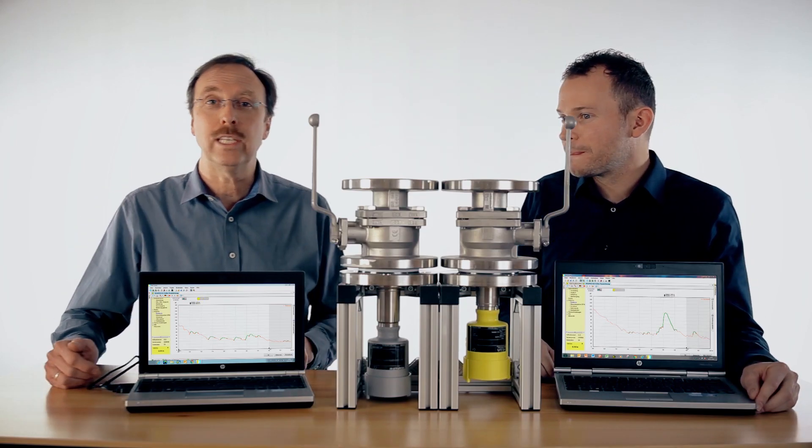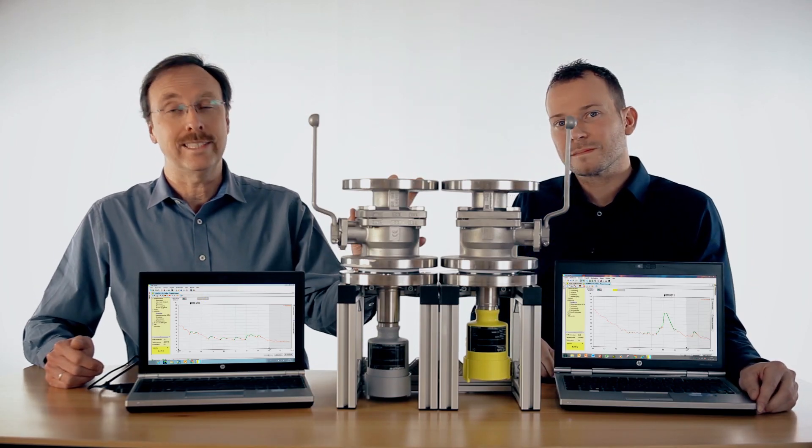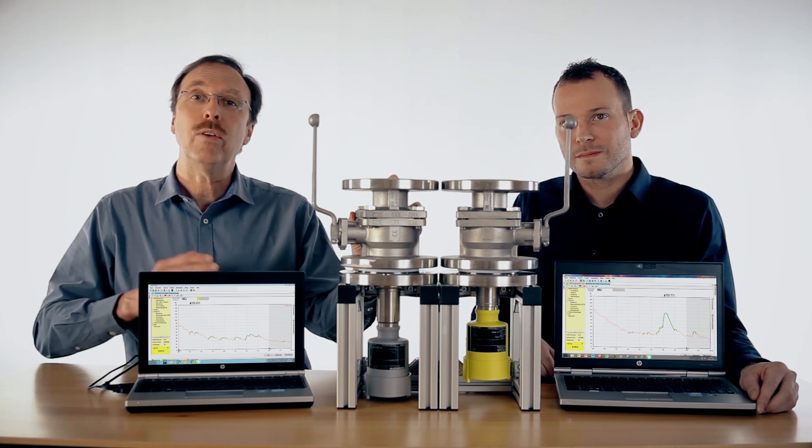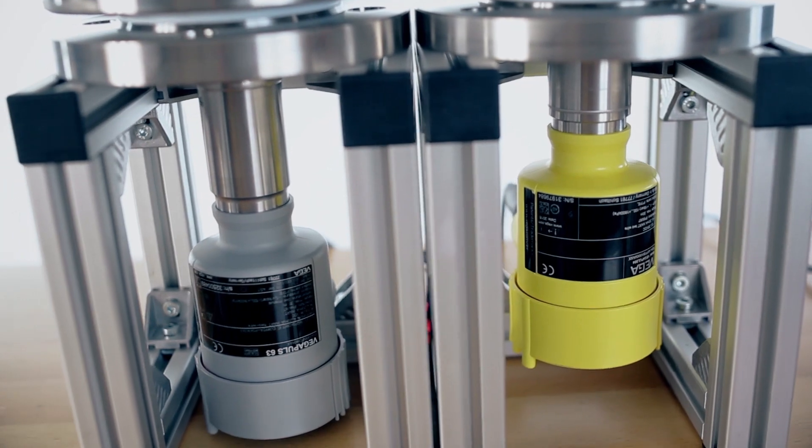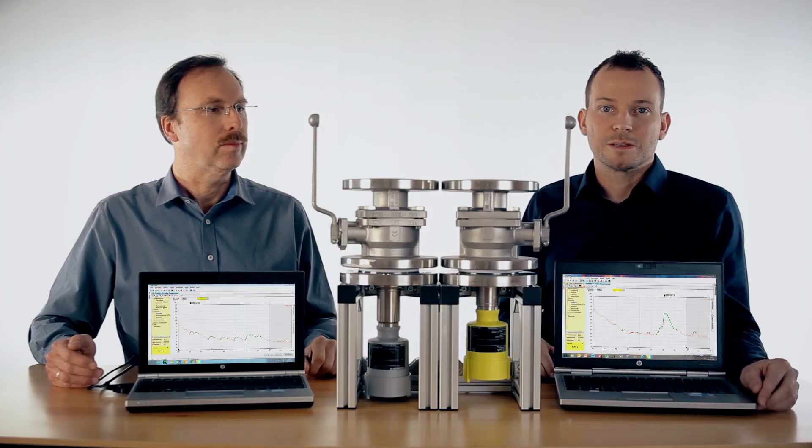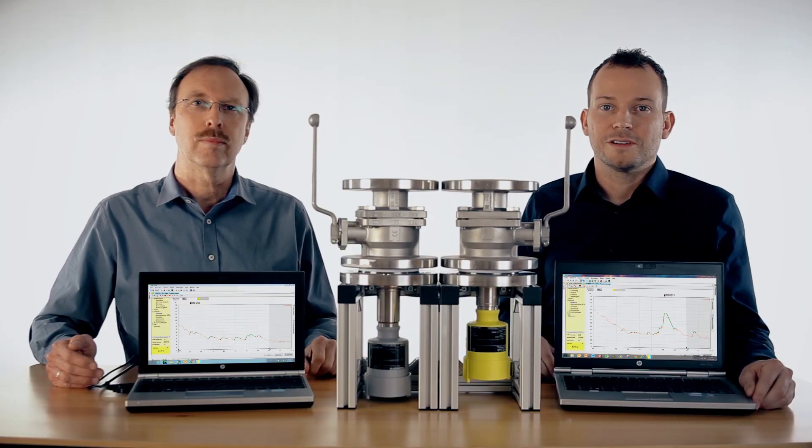This means for your application it is possible to use existing ball valves and you get a very high reliability over the whole complete measuring range. So the Vega Pulse 64 is the perfect sensor for your ball valve applications.